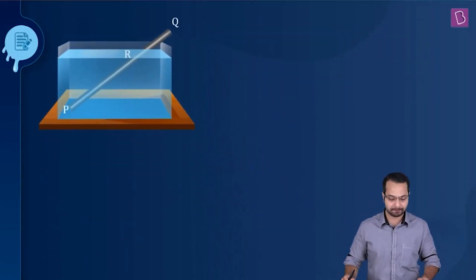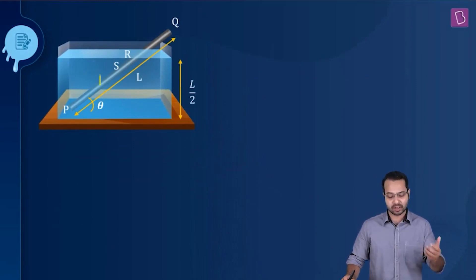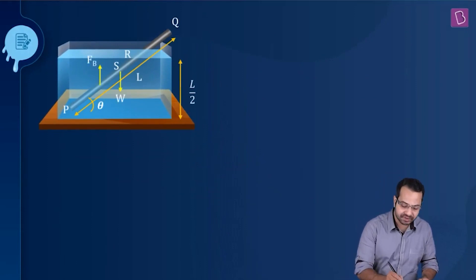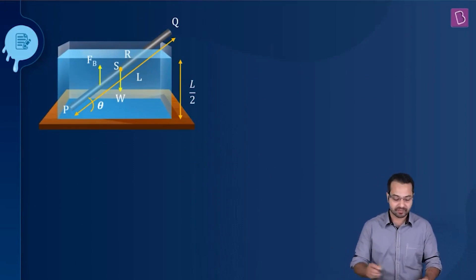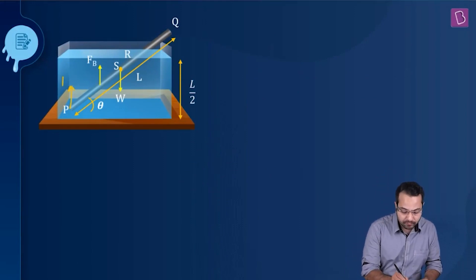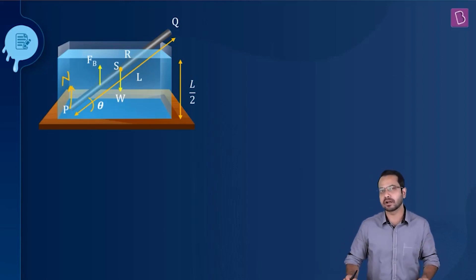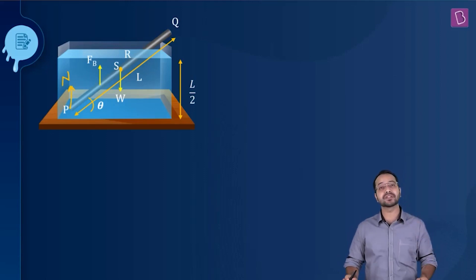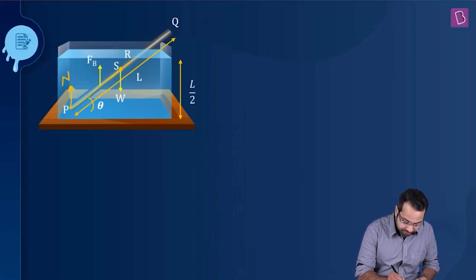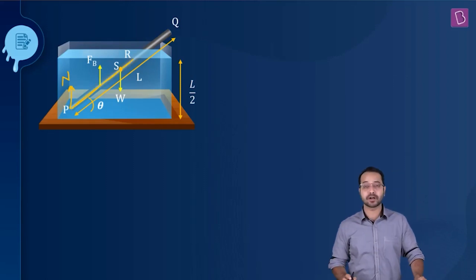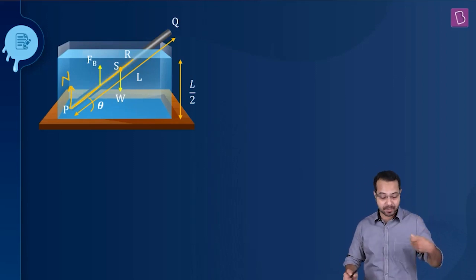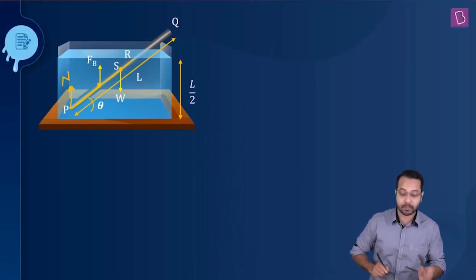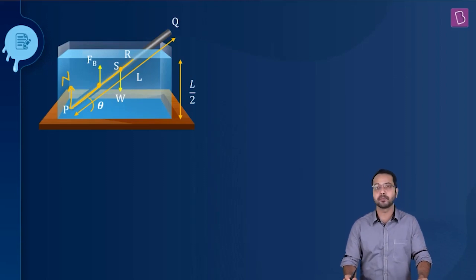Let's look at the free body diagram. Number one, the weight of the rod acts at the midpoint of the rod. There will also be a normal force from the bottom of the tank because the end of the rod is in contact with it. There will also be a buoyant force, which acts on the part of the rod that is submerged — specifically at the midpoint of the submerged portion, which is the midpoint of PR.